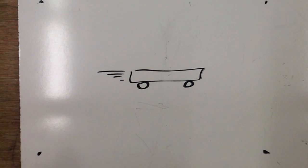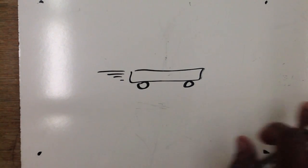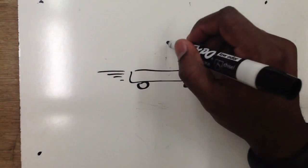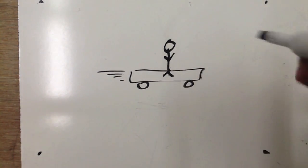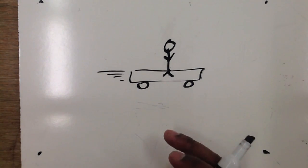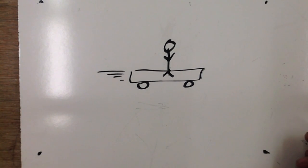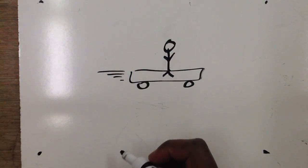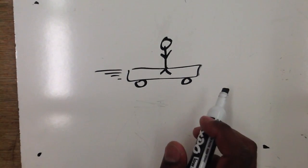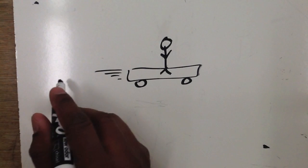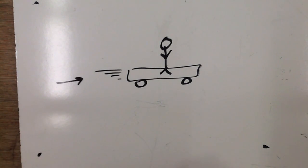Unbalanced forces cause accelerations. Let's look at some examples. Let's say we have a skateboard moving to the right. Unbalanced forces applied to an object in the same direction as the motion will cause that object to speed up. So if our skateboarder was traveling this way and somebody came up behind him and applied an additional force in that same direction, he'll speed up — just like if you're riding along on a skateboard and somebody gives you an extra push.